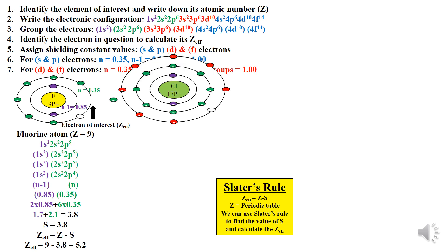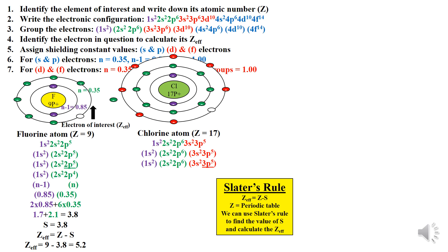Moving on to the next question: determine the Z-effective for the 3p electron in chlorine atom. Following the same steps — Step 1: the element is chlorine, atomic number is 17. Step 2: electronic configuration is 1s², 2s², 2p⁶, 3s², 3p⁵. Step 3: group the electrons as per the guidelines. Step 4: the electron of interest is the 3p electron in chlorine — leave it out; do not assign any S value to it, so 3p⁵ reduces to 3p⁴.